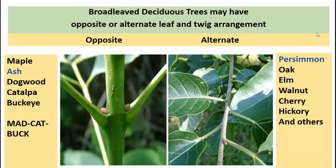Now diving into hardwoods — by far the most common trees in Indiana, representing the most species across the state. Broadleaf deciduous trees can have opposite or alternate leaf and twig arrangement, a great way to winnow down choices. Most native trees that are opposite fall into maple, ash, dogwood, catalpa, and buckeye categories — we can use the acronym MAD CAT BUCK to remember that. Leaves come out directly opposite each other on the stems.